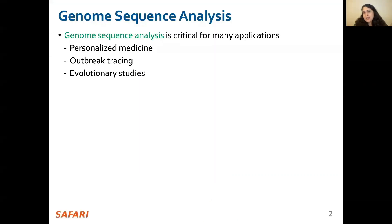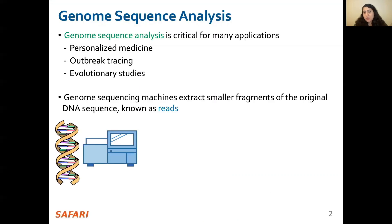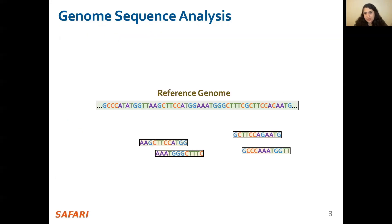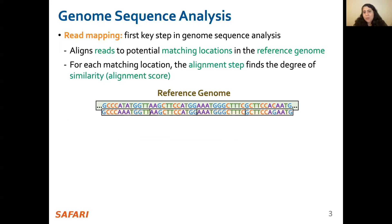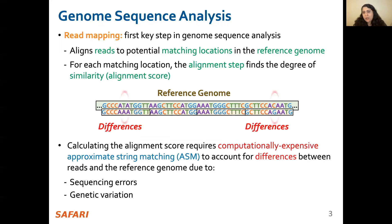Genome sequence analysis is critical for many applications. Genome sequencing machines extract smaller fragments of the original DNA sequence known as reads. Readmapping is the first key step in genome sequence analysis that aligns reads to potential matching locations within the reference genome. And for each matching location, the alignment step finds the degree of similarity between read and reference by calculating the alignment score. Calculating the alignment score is computationally expensive since it requires approximate string matching to account for differences between reads and the reference genome.